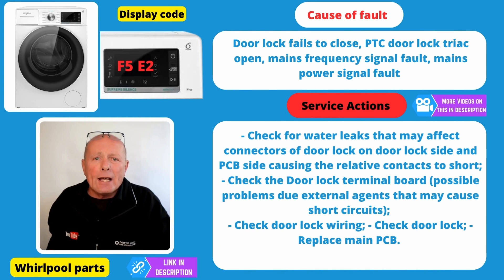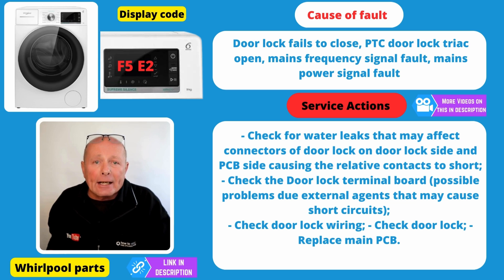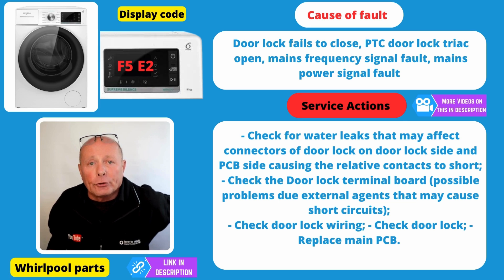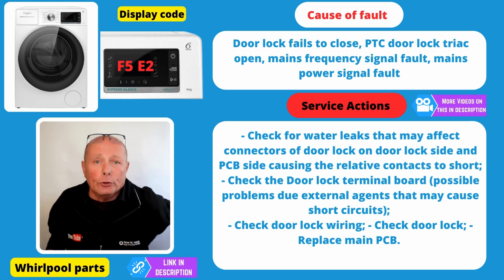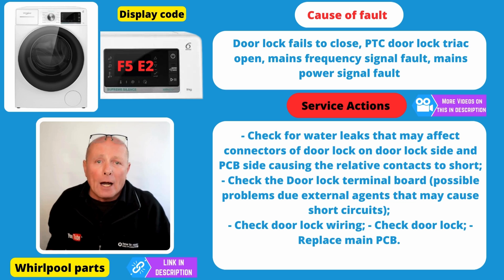Error Code F5E2 is a door lock fault or door wiring fault. It can also be the triac on the actual circuit board itself. Common faults I've come across with these are burnt connections on the actual door lock. You want to make sure that you inspect the wiring, the door lock itself and also all the connections.